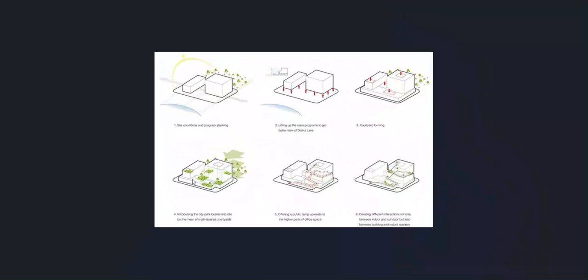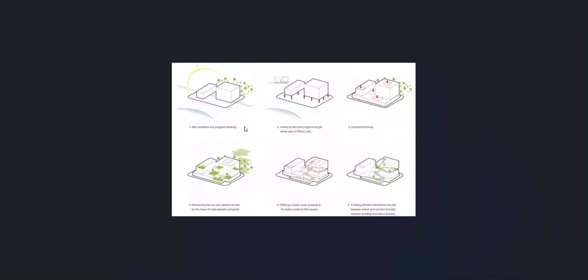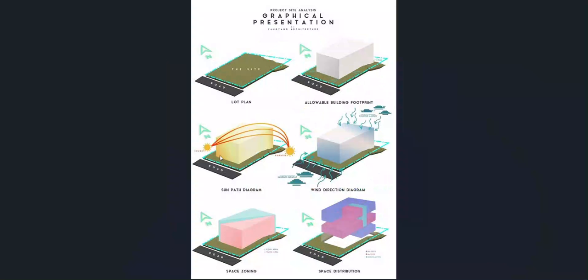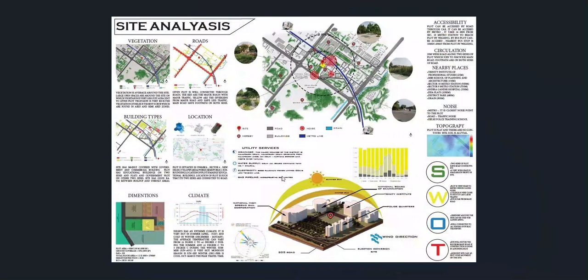At the end, you'll have something like this — there are different ways of representing it. I showed you a more plan view, but it could also be done in other diagram formats to explain your analysis. This is a graphical representation of what we were talking about: the sun movement, the wind, space distribution, and so on. The first thing you needed to know is what site analysis is, and it's going to help you make decisions about your design — it's a very key, important part of the design process.